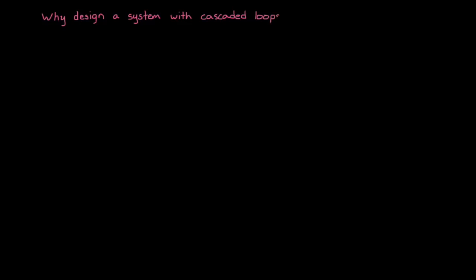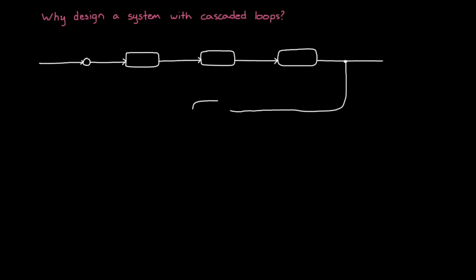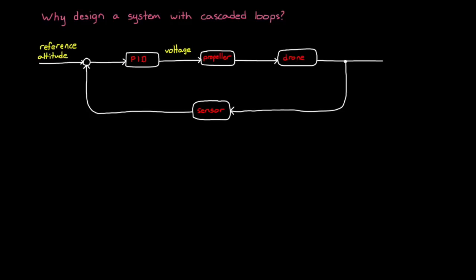The first question might be: why design a system with cascaded loops in the first place? Why not stick with a single loop approach that we have so much experience with? For example, a single loop approach would be to design one PID controller that takes altitude error and outputs a motor voltage. In this case, the altitude directly drives the motor voltage — there's no middle step of first commanding a motor speed.